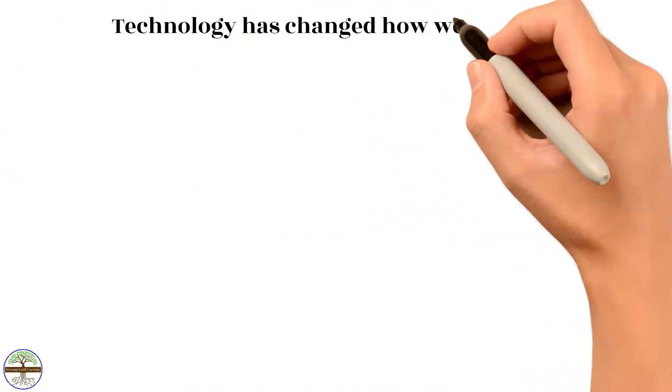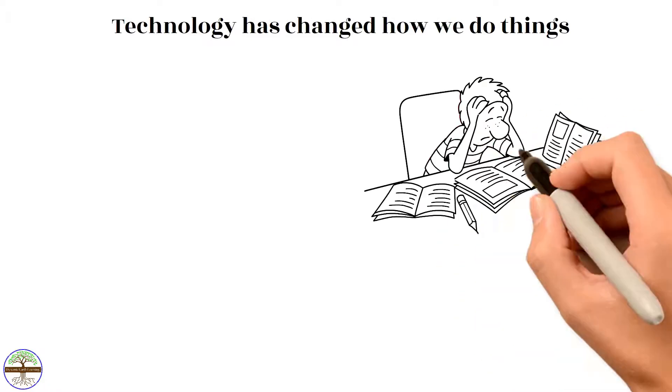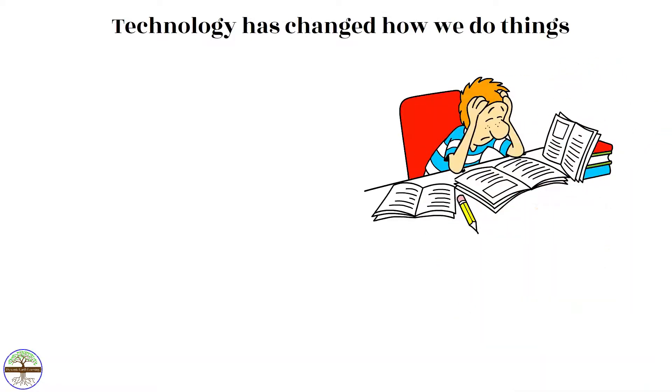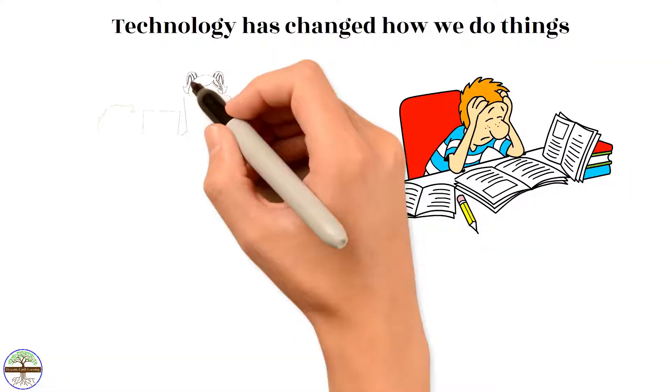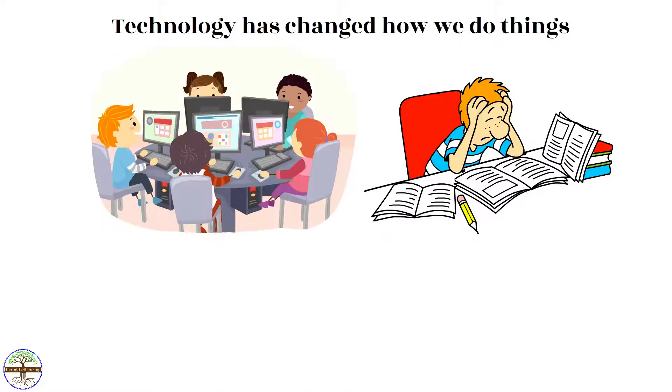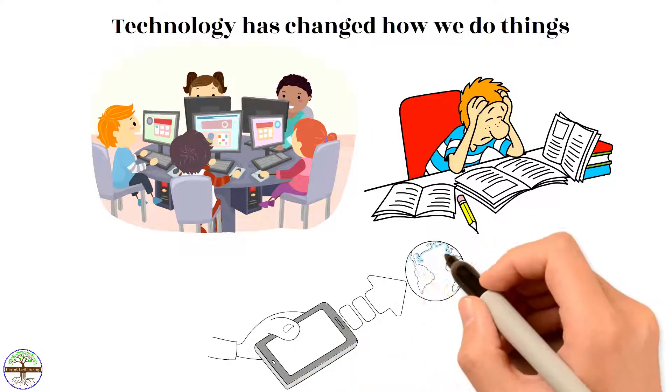Technology has changed how we do things. Once, before the Internet, you could only read books in the library or attend physical lessons. Digital learning changed how we do things and how we interact with the rest of the world.